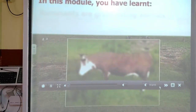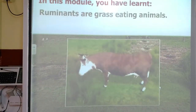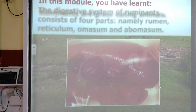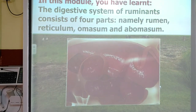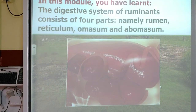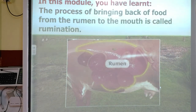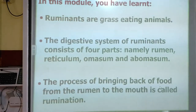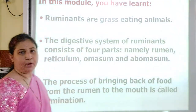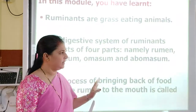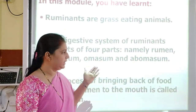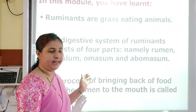In this module you have learned: ruminants are grass-eating animals. The digestive system of ruminants consists of four parts — rumen, reticulum, omasum and abomasum. The process of bringing food back from the rumen to the mouth is called rumination. We have now seen both the human digestive system and the grass-eating animal digestive system.